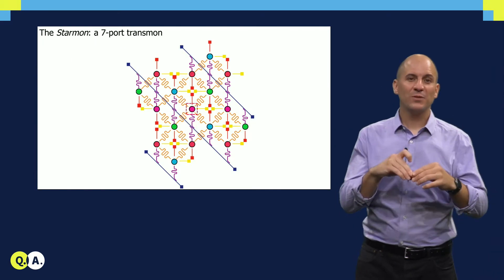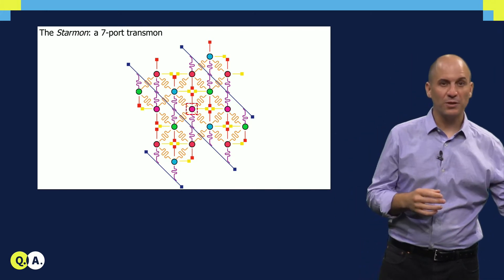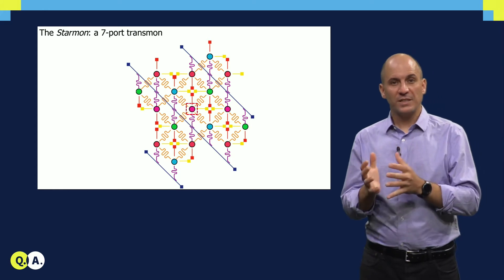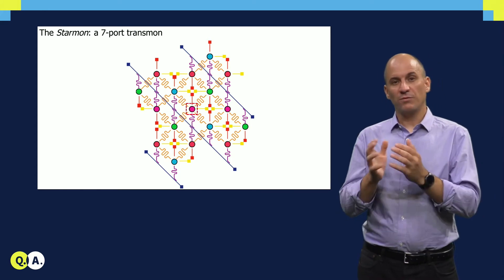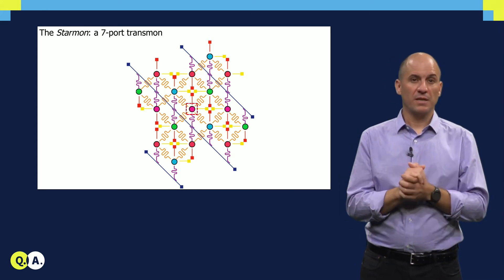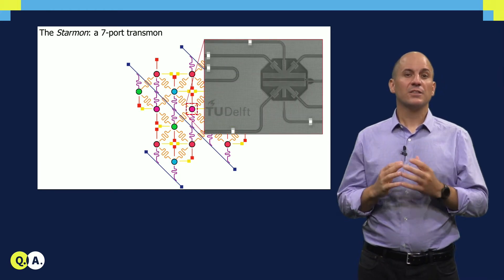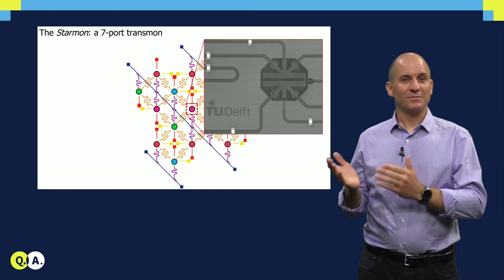Now, let's go back to the colored circles representing our transmon qubits. Except on the edges, qubits couple to seven objects: four buses, one readout resonator, one flux line, and one microwave line. These interconnectivity requirements give our transmon a characteristic shape and nickname, starmon.